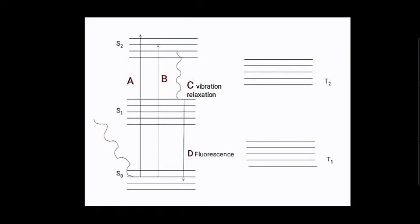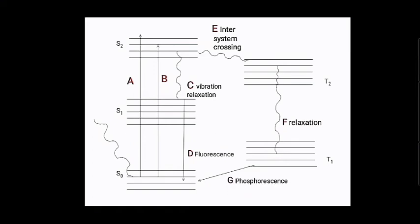If the electron changes its spin, it will cross over from S1 to T1 — this is known as inter-system crossing, path E. The electron may then relax vibrationally by coming down to the lowermost vibrational level of T1, which is path F. From T1, the vibrationally relaxed electron comes back to the ground state S0 by giving out light energy — this is called phosphorescence — or by giving out heat energy as internal conversion. Phosphorescence has a longer lifetime than fluorescence.